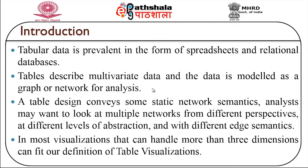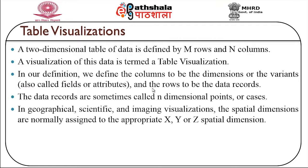In most visualizations that can handle more than three dimensions, we can fit our definition of table visualization. A two-dimensional table of data is defined by m rows and n number of columns, and a visualization of this data is termed as table visualization. We define the columns to be the dimensions or variance, also called fields or attributes, and the rows to be the data records, sometimes called n-dimensional points or cases.